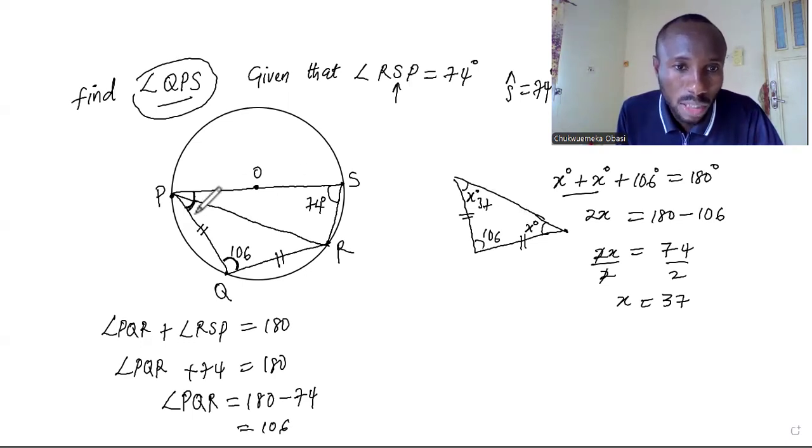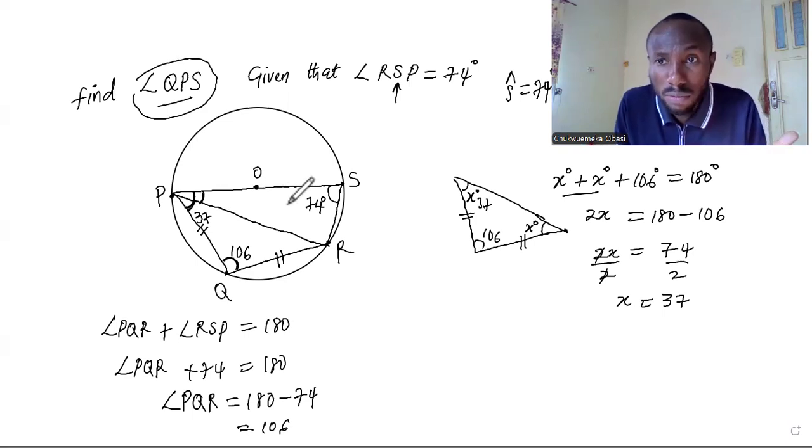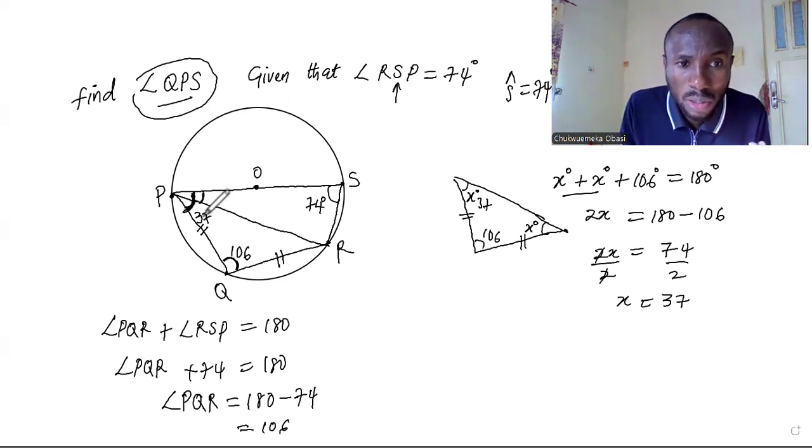So that means this angle here is 37 and this angle here is 37. So I'll just come right here and plug in the 37. So we are halfway getting the answer. If I can find what this angle is all about, then of course I can tell what the answer is, because we are looking for the whole of this angle here. Now we've gotten a part of it which is 37, so we need to get this part. Once we get this part we can sum up the whole angle and of course we've gotten QPS.